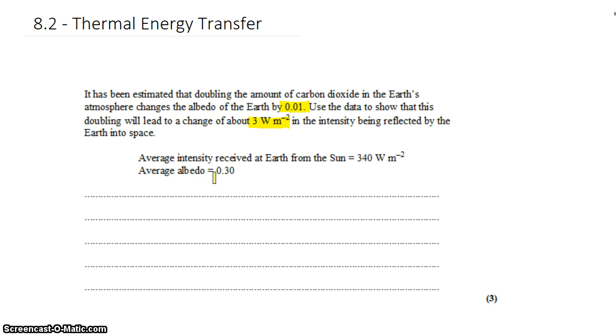To answer this question, we need to understand what albedo is. It's the fraction of energy received by a surface that gets reflected. So a mirror would have a very high albedo, about 1, almost 100%. The Earth's albedo of 0.3 is about 30%. About 30% of the energy that the Earth receives from the Sun is reflected rather than absorbed.